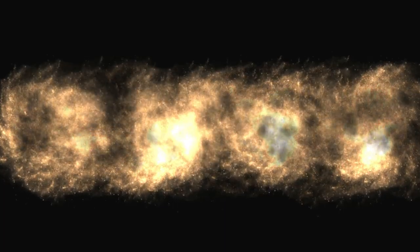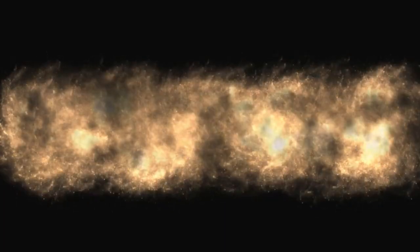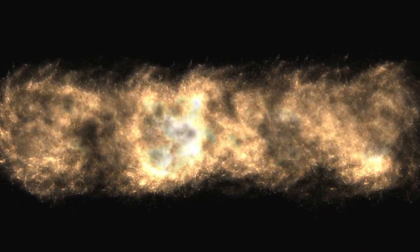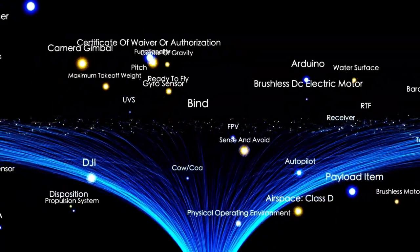Scientists estimate that the diameter of the observable universe is about 93 billion light years. That may seem surprising when compared to the estimated age of the universe, which is around 13.8 billion years.